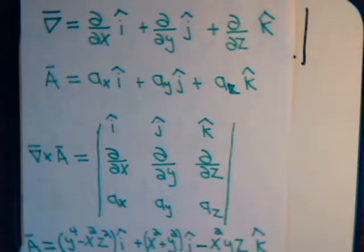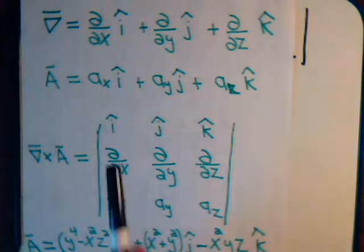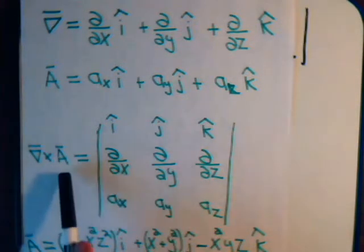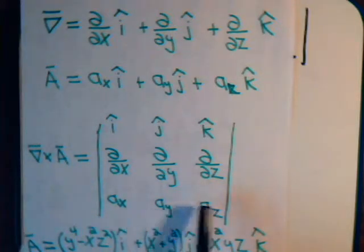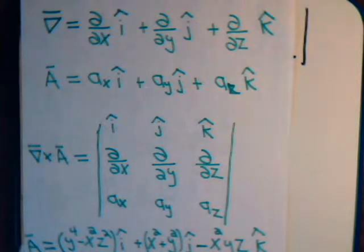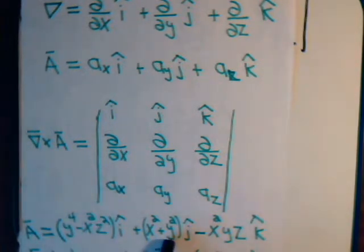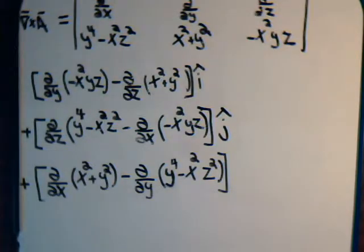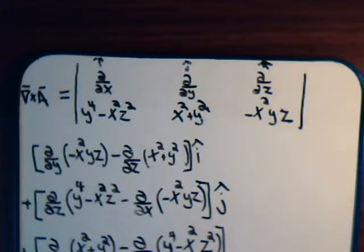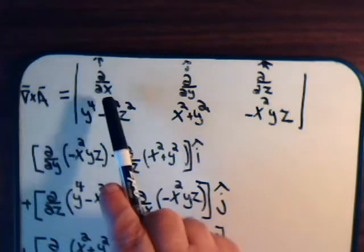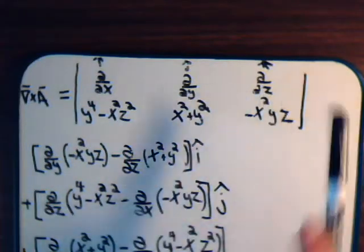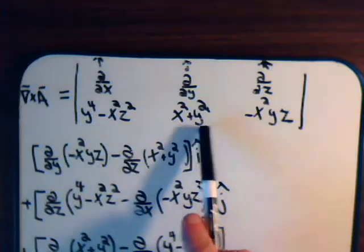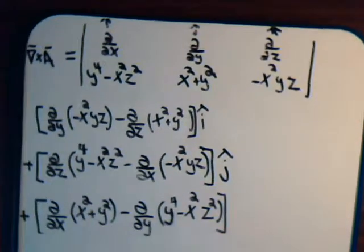The curl of a vector is itself a vector, because whenever you take a cross product you generate another vector. To find the i, j, and k components of the curl, we take this determinant and expand it out using minors. We set up the determinant where the second row is ax, ay, and az — these are the unit vectors i, j, k; here are the components of the del operator; and here are the components of vector a. Expanding out in minors gives us this expression.